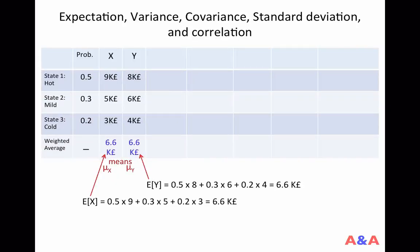We were studying how to compute expectation, variance, covariance, and so on of a random variable using a simple numerical example. In our setting, there are only three possible states: the upcoming summer is either hot, mild, or cold — hot with probability 0.5, mild with probability 0.3, and chilly with probability 0.2.